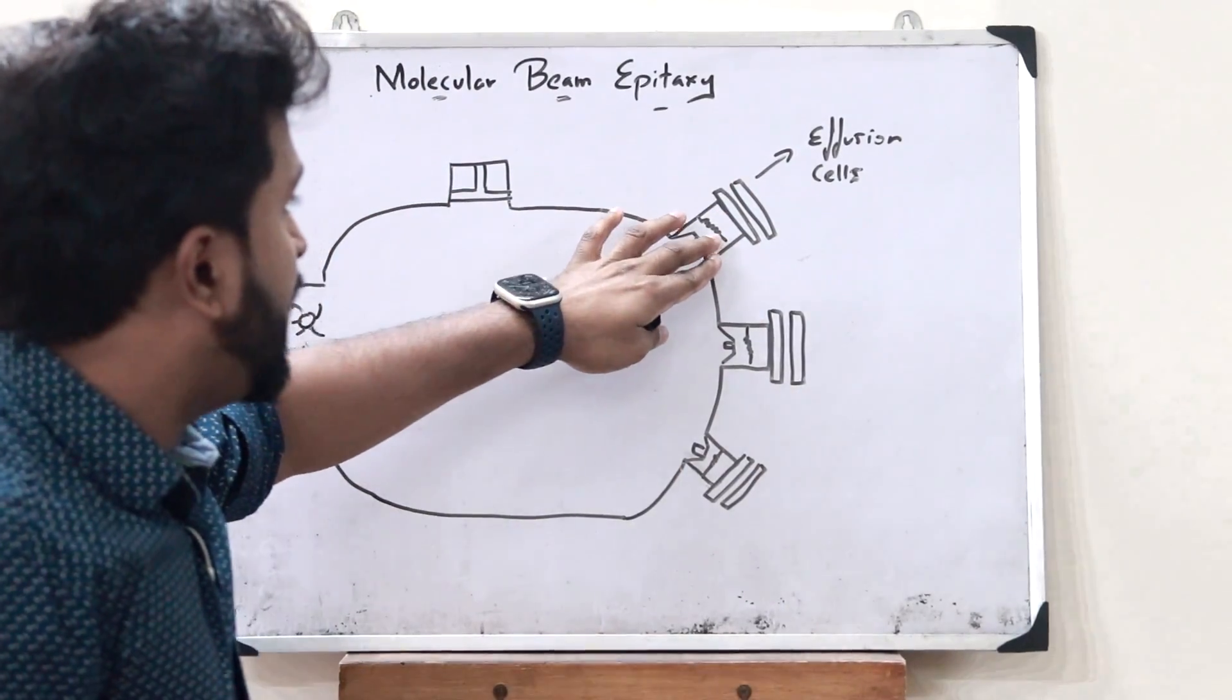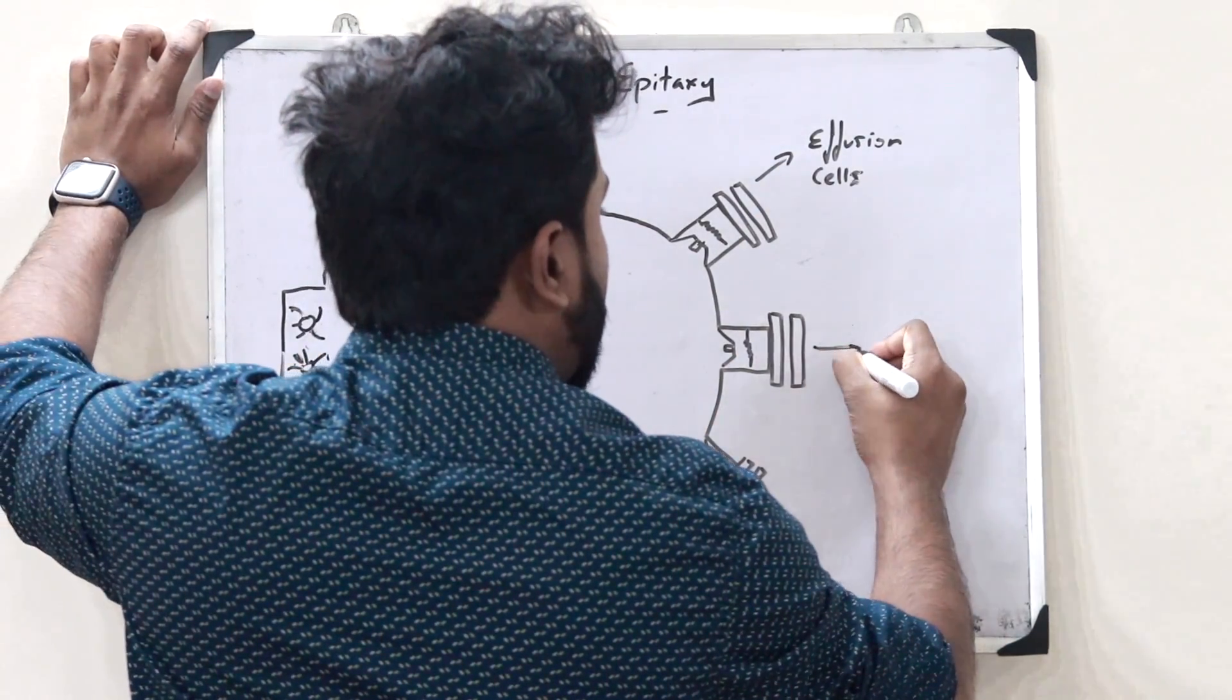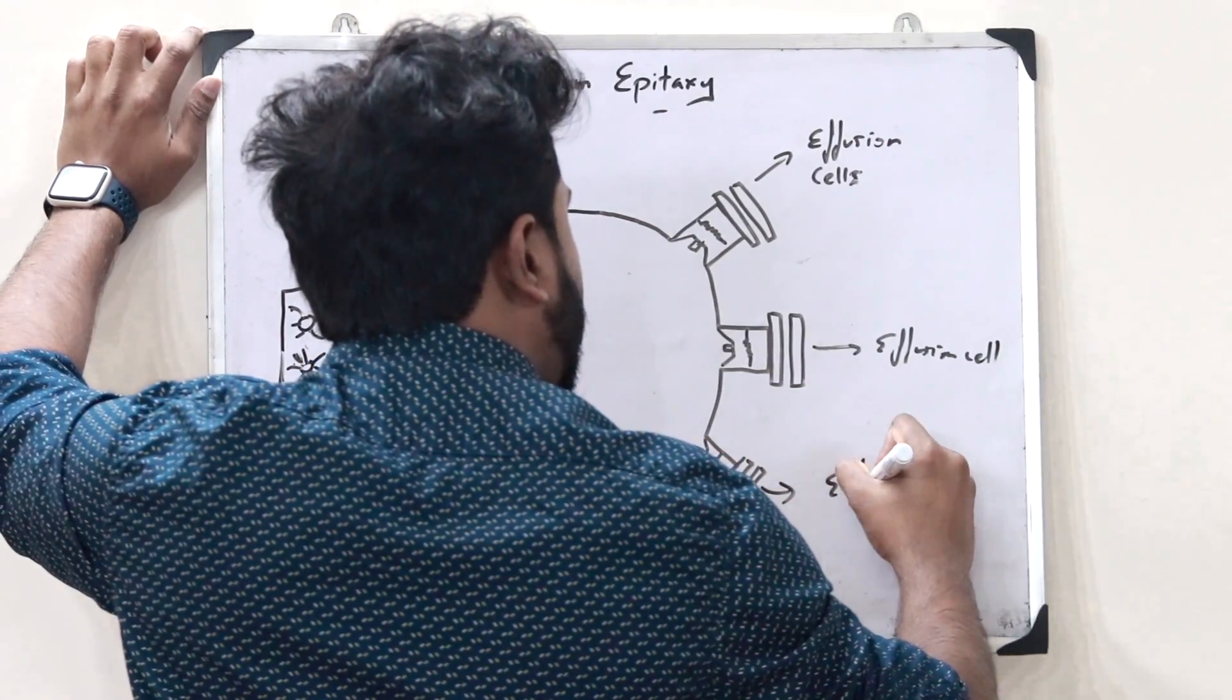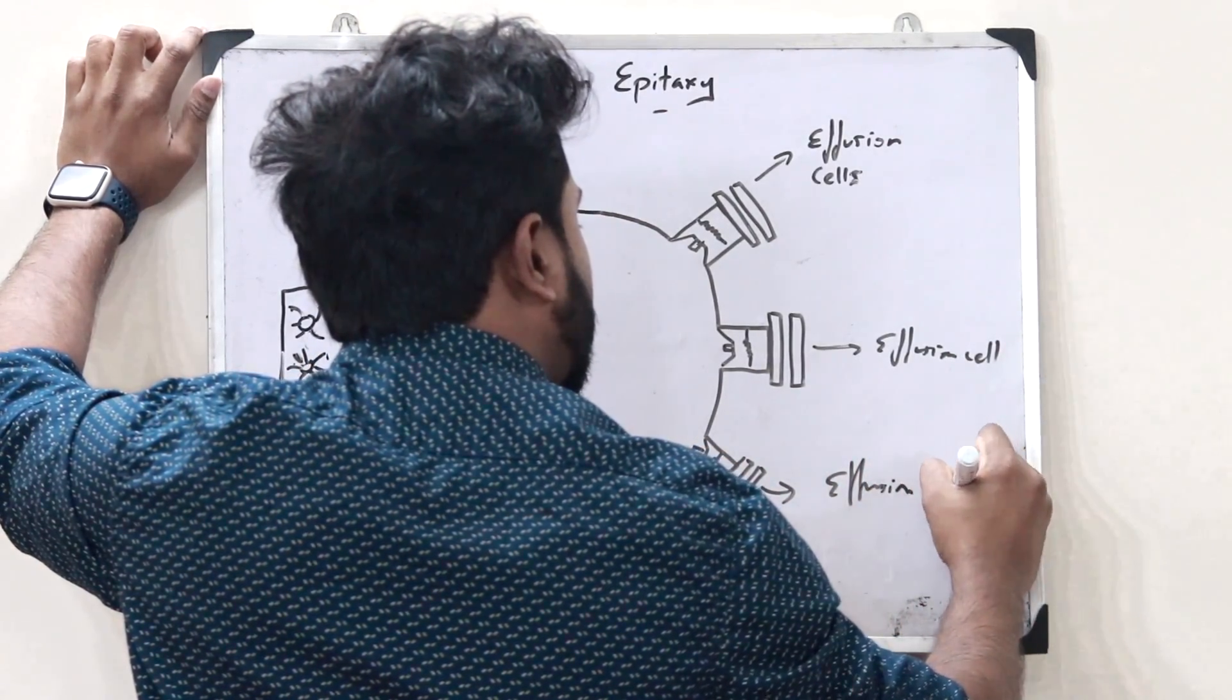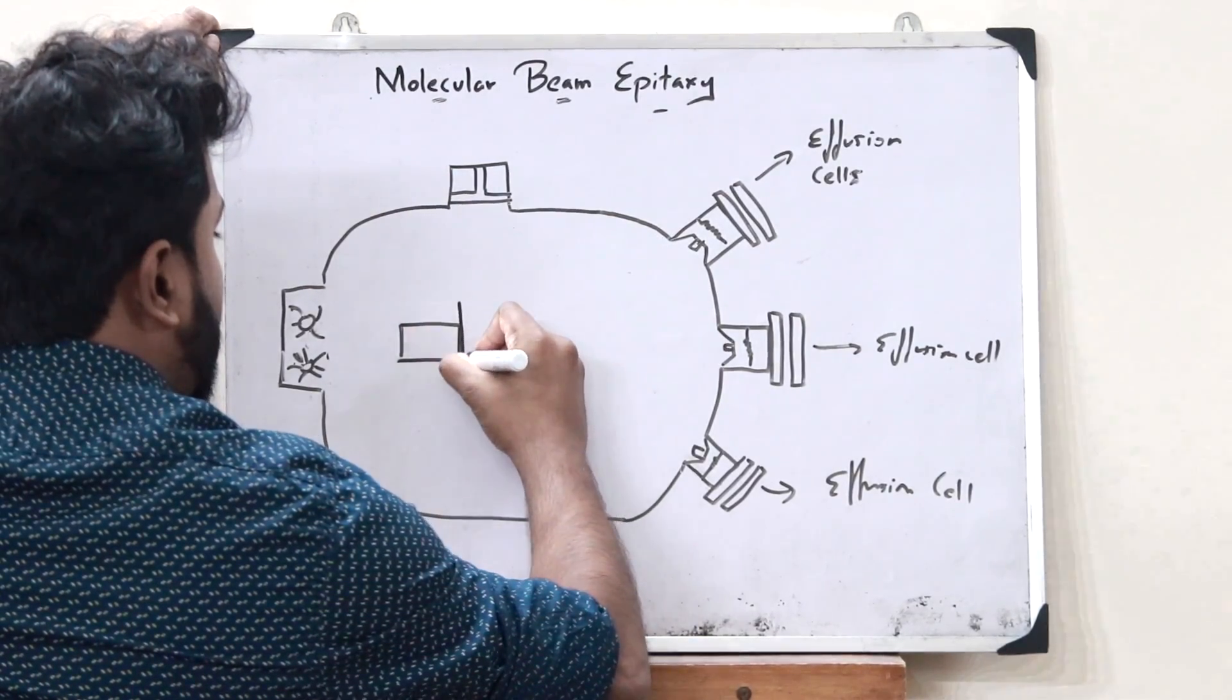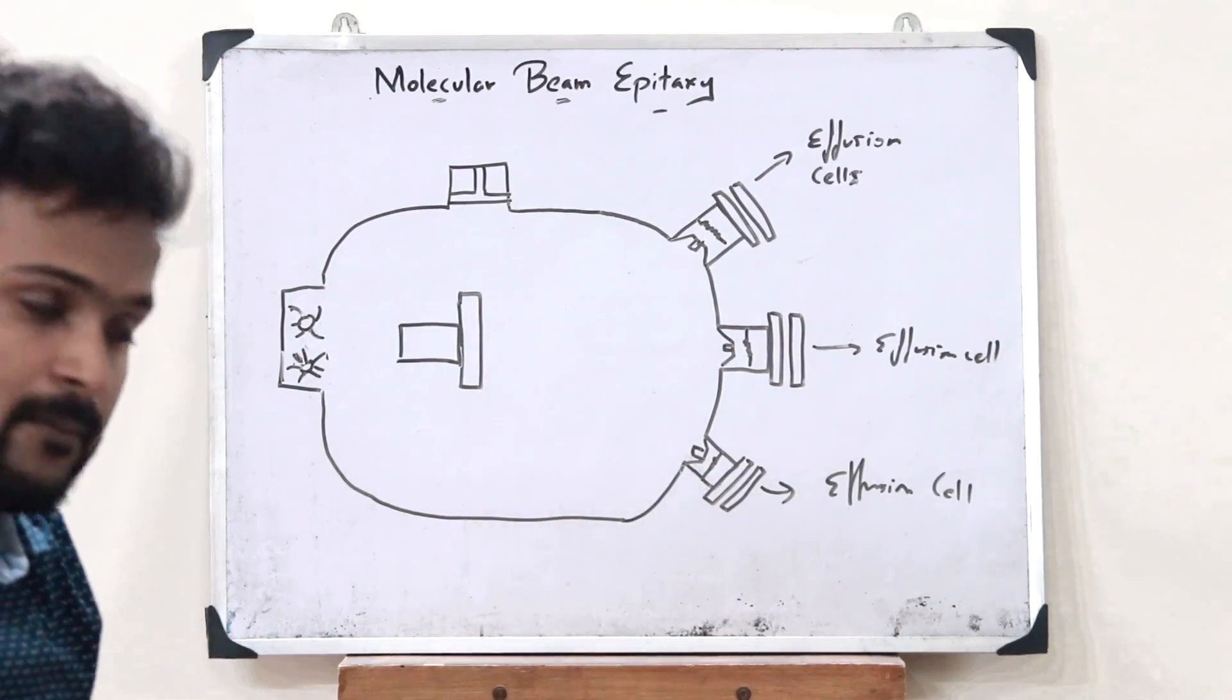Here, this is achieved by providing a certain kind of heating. So here, this is an effusion cell. This is an effusion cell. So here, we have multiple effusion cells like this. And now, over here, here we place the crystalline substrate on top of which we need a particular thin film to be formed.